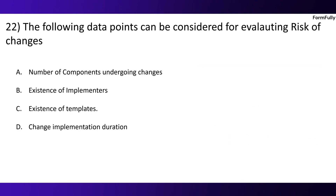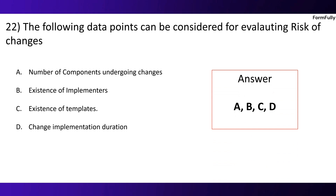Question 22. The following data points can be considered for evaluating risk of changes. Option A: Number of components undergoing changes. Option B: Existence of implementers. Option C: Existence of templates. Option D: Change implementation duration. The correct answer is A, B, C, and D — all of the above.